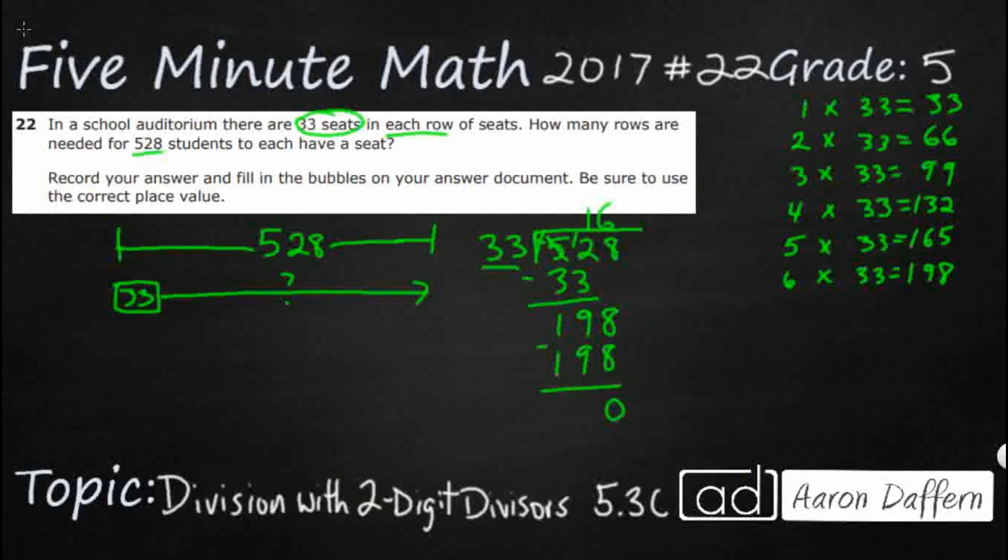Seems too good to be true. Let's double check that. Remember, the inverse operation of division is multiplication. So, you can always multiply here. And let's do 33 times 16. That should get us back to 528.